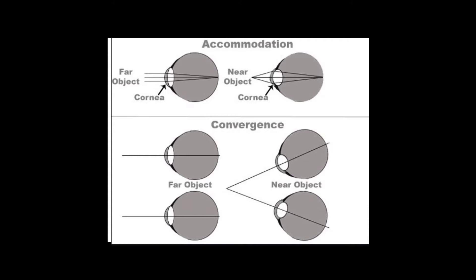Binocular cues include retinal disparity. Objects within 25 feet project images at slightly different locations on the left and right retinas. Thus, each eye sees a slightly different view of the objects. Convergence is the feeling the eyes converge toward one another as they focus on a target.